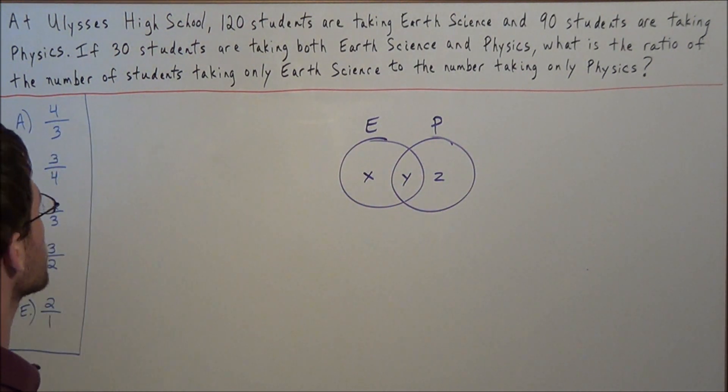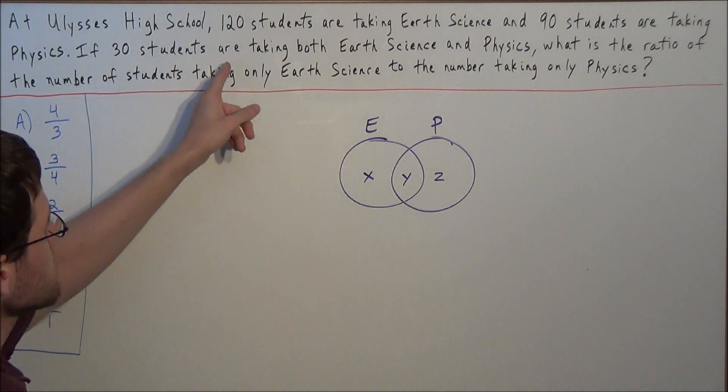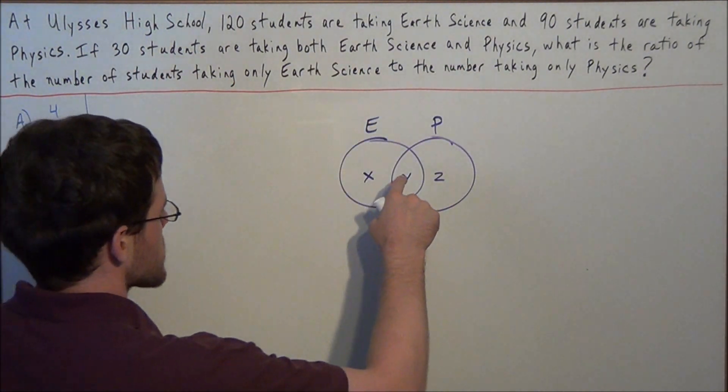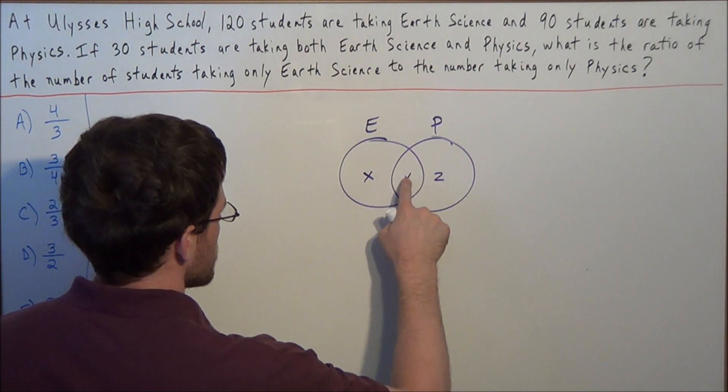So now we go to the problem, and we're given that 30 students are taking both Earth Science and Physics. So this tells us that we can replace Y with 30.